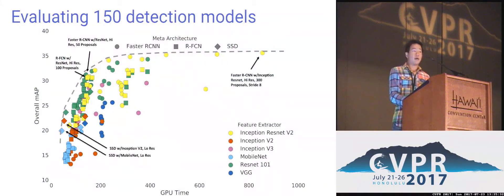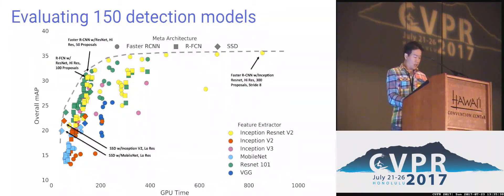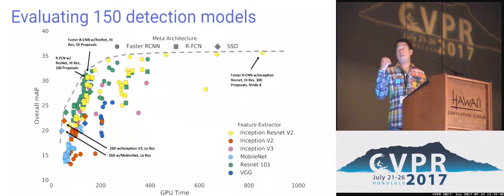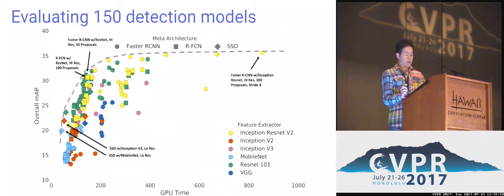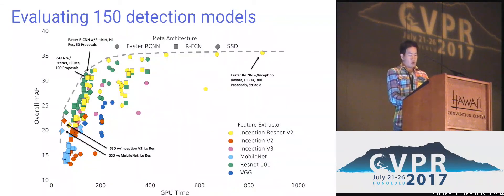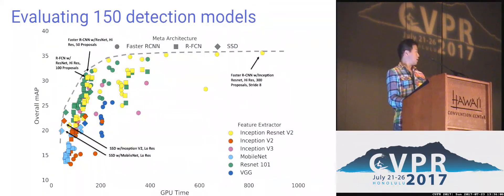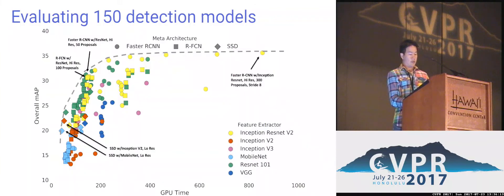We evaluated each of our model combinations — 150 different model combinations — along two axes. Performance is measured by mean AP on COCO, that's the y-axis, and speed of running a single image through the network is the x-axis. In particular, we've identified a frontier of optimal models. Models inside this hull you might not want to use, at least for COCO, just because there's always one that's faster and more accurate. Models on the frontier we really like, and they range from the lightweight MobileNet models that you can run on your mobile device, to the much heavier but super accurate Faster R-CNN with Inception ResNet models.